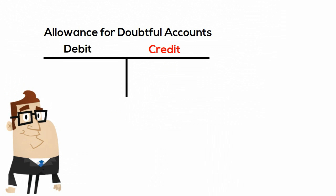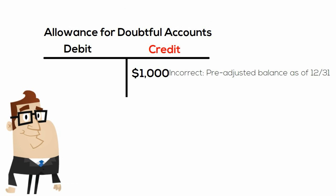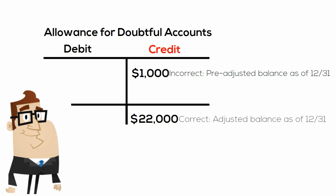With this new estimate of its doubtful accounts, management will need to record an adjusting entry to properly state the balance in the Allowance for Doubtful Accounts account. Starting with the pre-adjusted trial balance credit of $1,000, management needs to reach a credit of $22,000. In order to go from the incorrect credit of $1,000 to the correct credit of $22,000, it will need to record an adjusting entry of $21,000 as a credit to the Allowance for Doubtful Accounts.